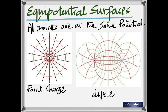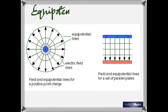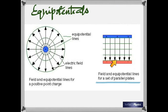On the right side of the diagram are the equipotential surfaces due to a dipole — an equal positive and equal negative charge. The red lines are the electric field lines; the green dotted lines show the equipotential surfaces. All the points on a green dotted line have the same potential. For the uniform field case, the equipotential surfaces are equally spaced.